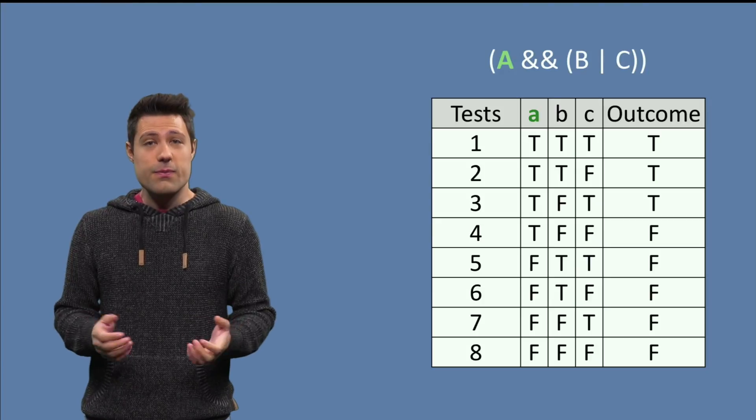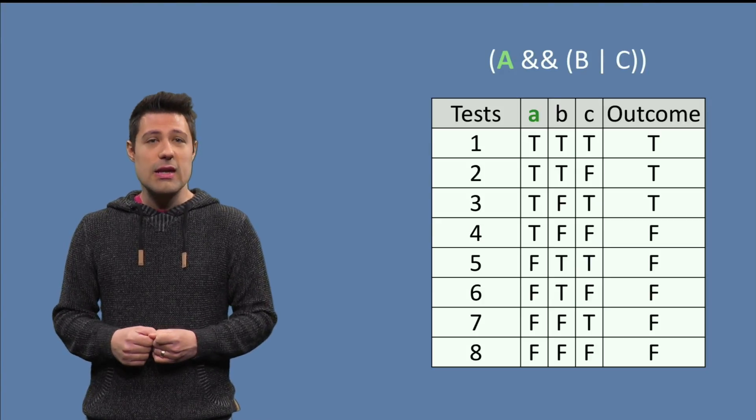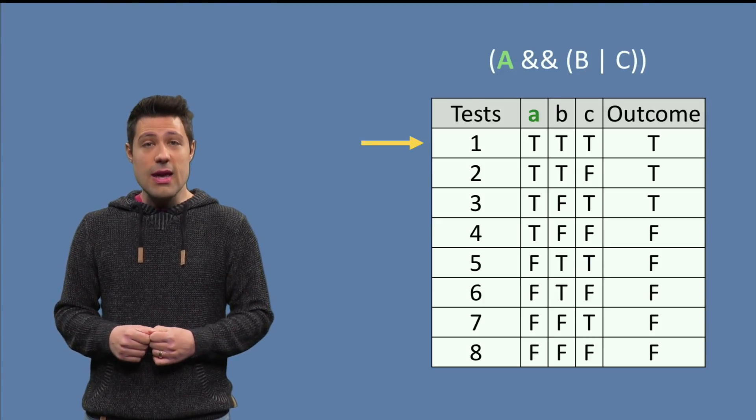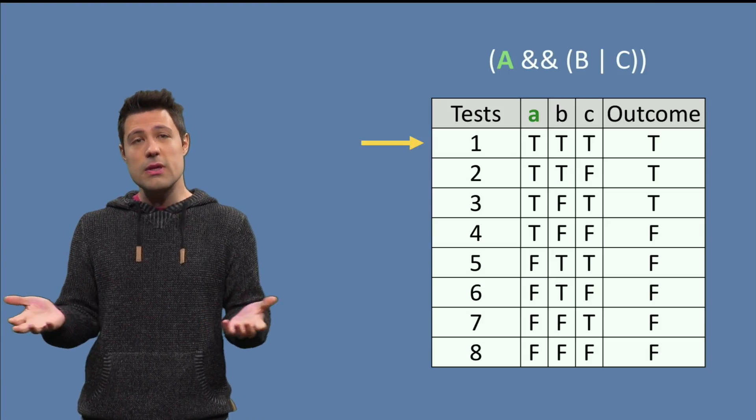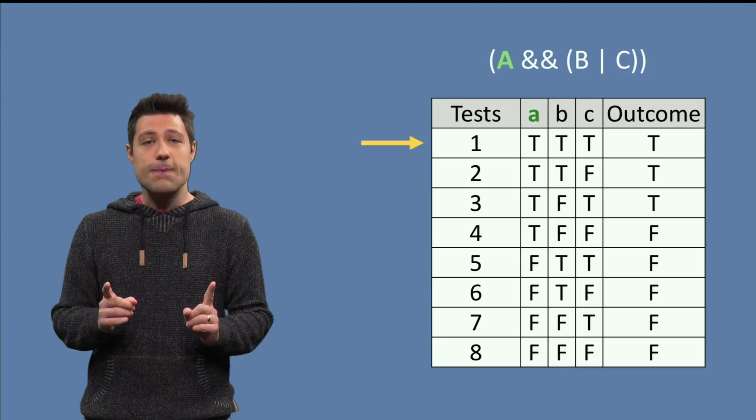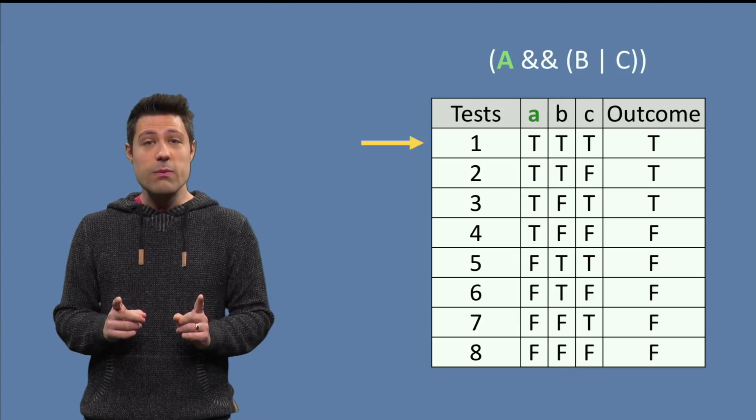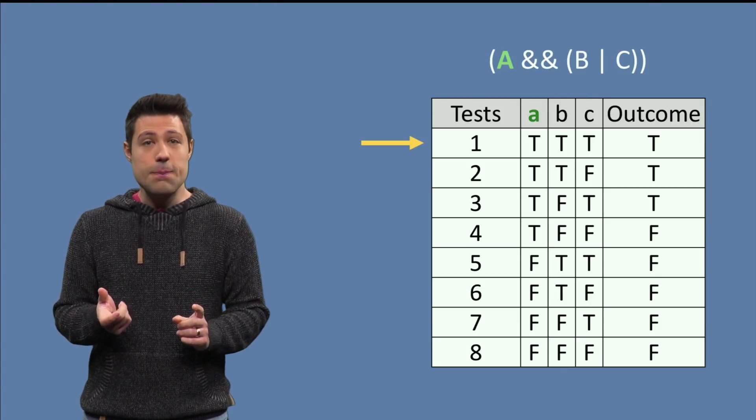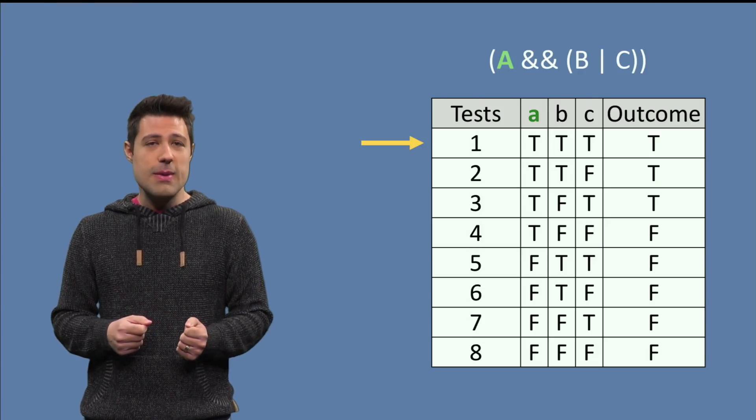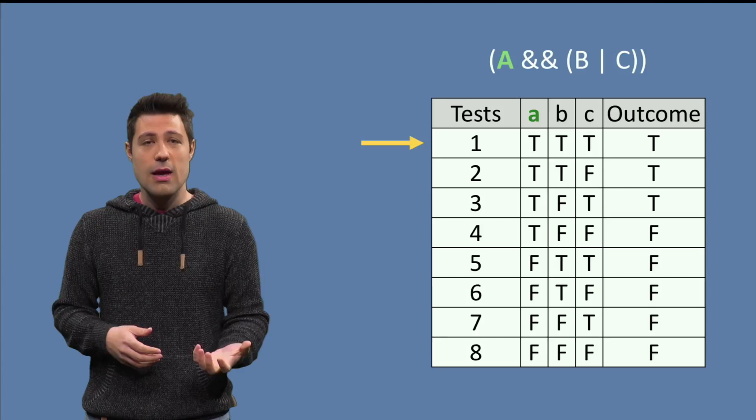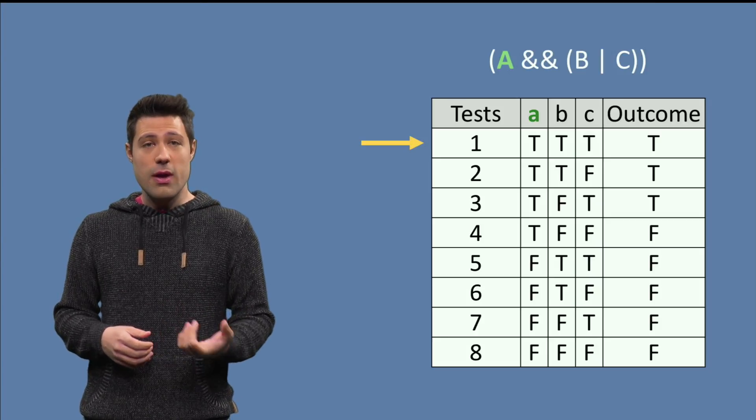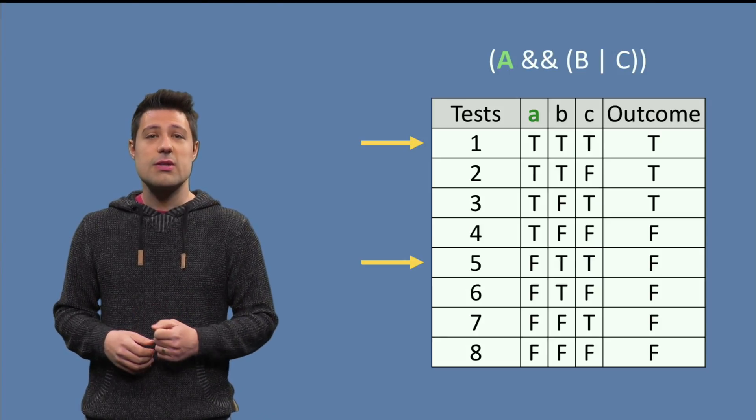Let's start with A, the first condition. In the first row, we see that when A is true, B is true and C is true, the outcome is true. Okay, now we need to see what happens when we flip A, but keep the other conditions the same. Meaning A false, B true and C true. Let's search for this row in the truth table. Yes, line 5.